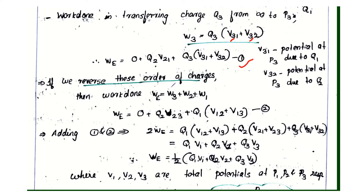Considering the reversed order: W3 is initially zero. W2 equals Q2 into V23, the potential at P2 due to Q3.